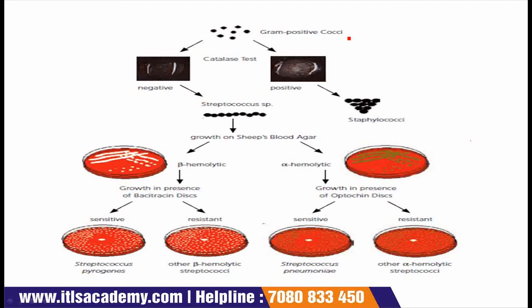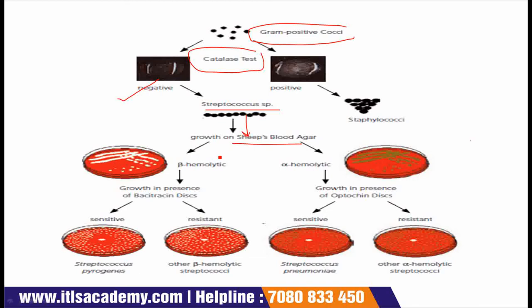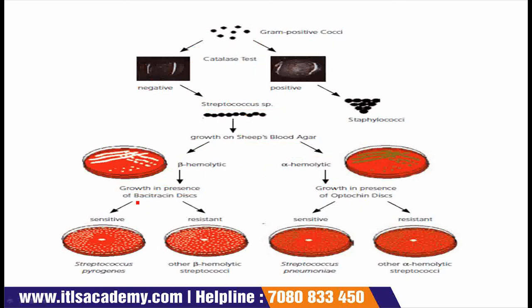You can see here in this diagram. This is gram positive cocci. First, catalase test is done. If catalase test is negative then streptococcus species, and it is grown on sheep's blood agar and two types of hemolysis are assessed: first is beta hemolytic and second one is alpha hemolytic.